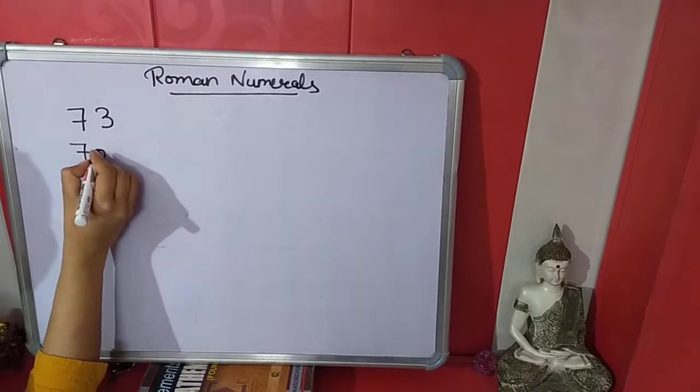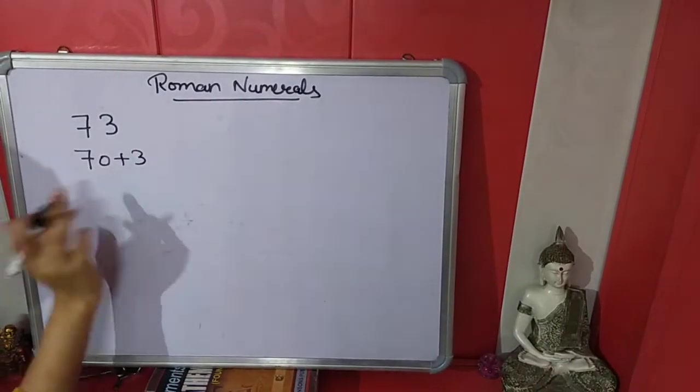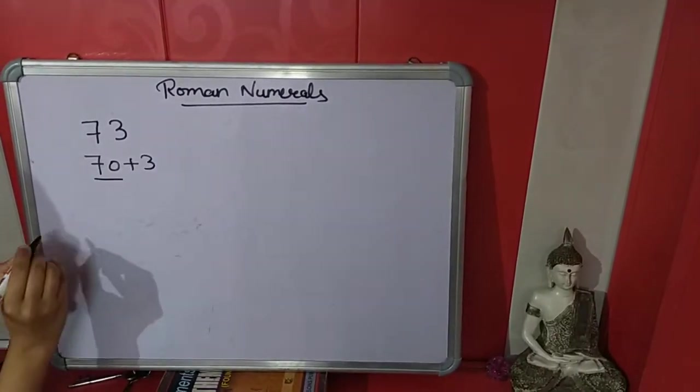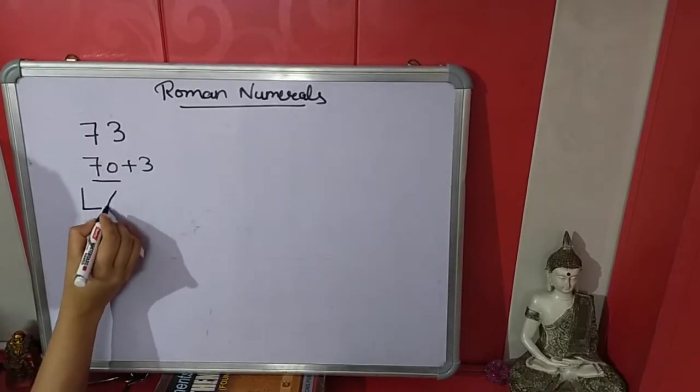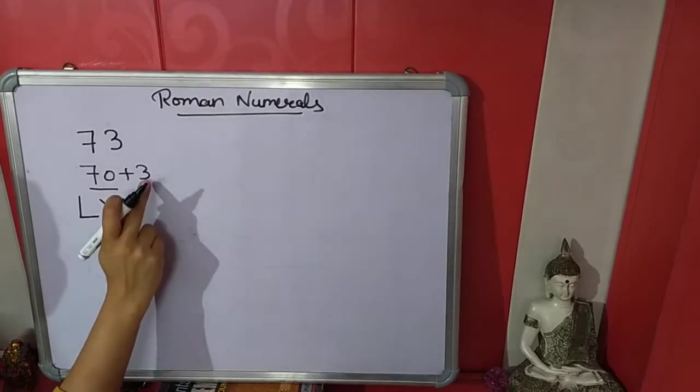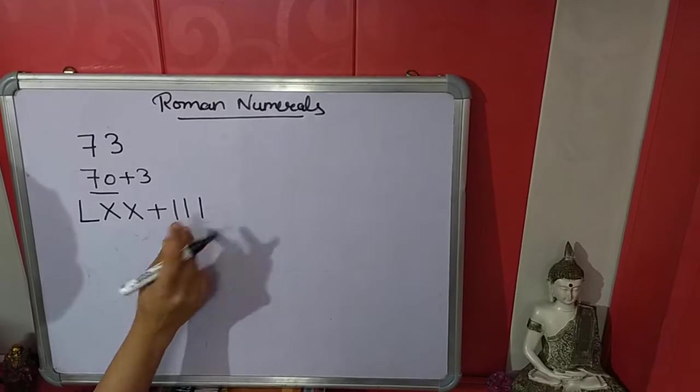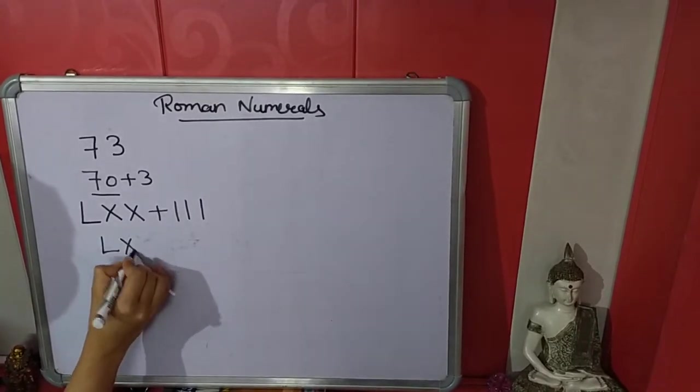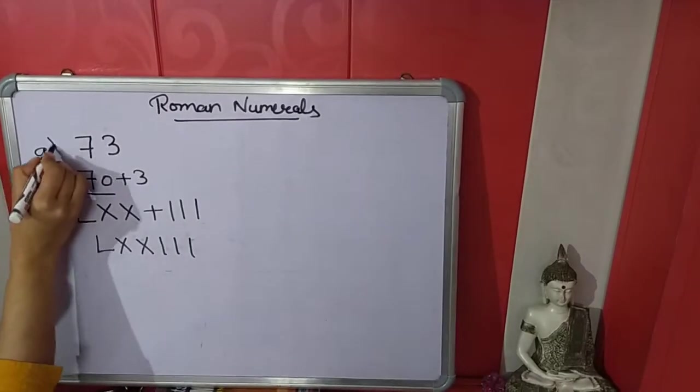Now what is the Roman numeral of 70? That is 50, 60, 70, that is LXX. Plus 3, what is 3? This is III, the Roman numeral of 3. Now we will write together this number, that is 73, LXXIII.